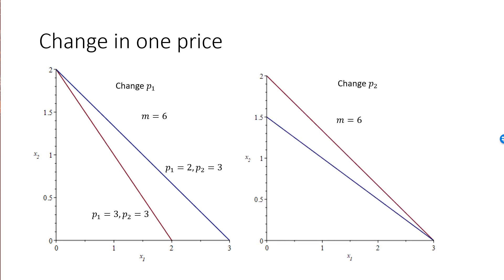For completeness, let's also have a look at what happens when we change the price of good 2. We start from the red budget line where p2 is 3. If we increase p2 to 4, the intersection with the y-axis creeps towards the origin, and the budget line will become flatter. The slope has gone from minus 2 over 3 to minus 1 half.